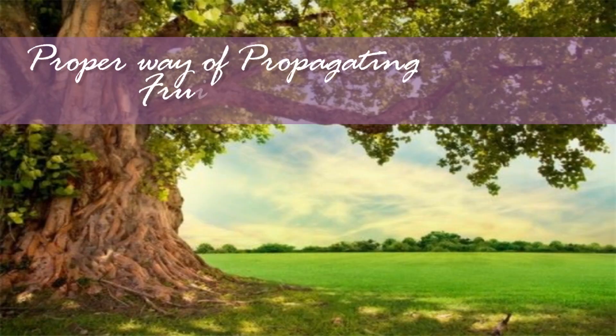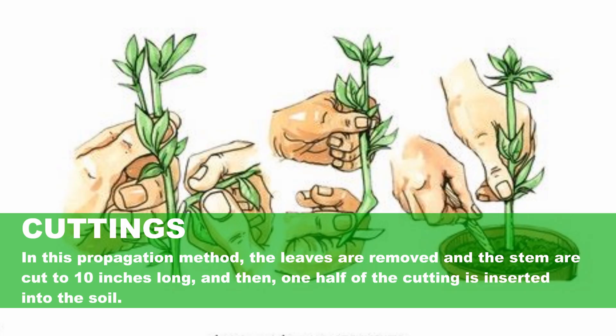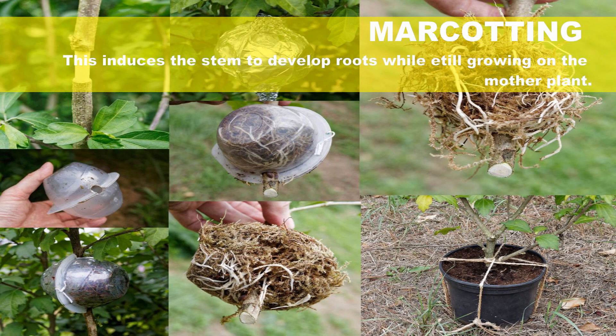The proper ways of propagating fruit-bearing trees include cuttings, where the leaves are removed and the stem is cut to 10 inches long, then one half of the cutting is inserted into the soil. Marcotting involves causing the stem to develop roots while still growing on the mother plant.